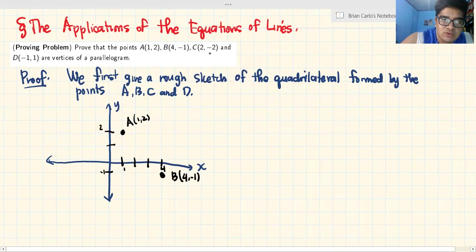Ngayon, C, 2, negative 2. Ito yung negative 2. So, ito yan. This is C (2,-2).